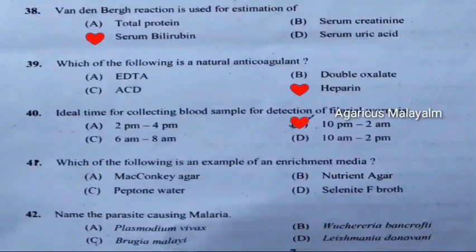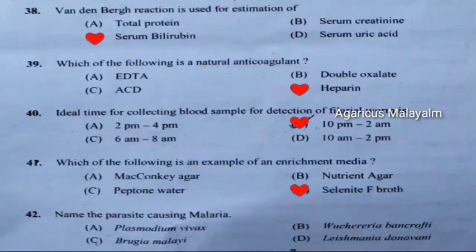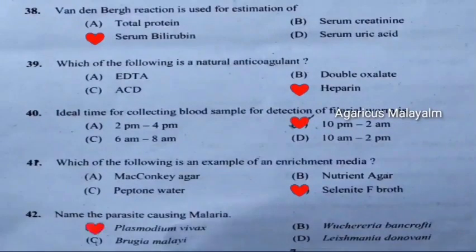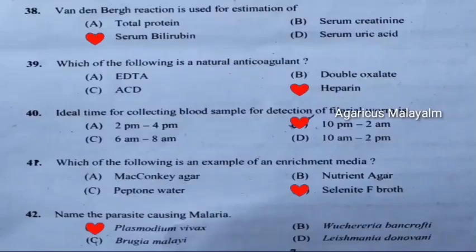Question 41 continued: Correct answer is option D, selenite F broth. Question 42: Name the parasite causing malaria — correct answer is option A, Plasmodium vivax.